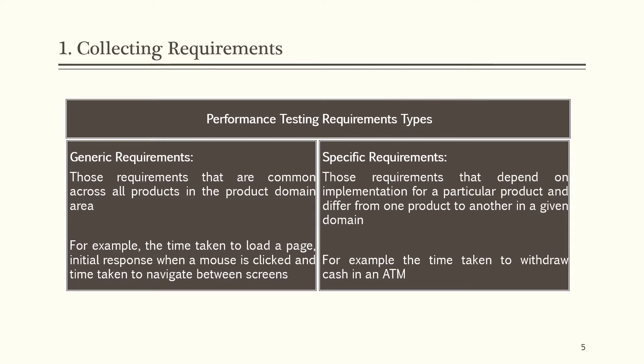There are two types of performance testing requirements: generic requirements and specific requirements. Generic requirements are those that are common across all products in the product domain area — for example, the time taken to load a page, initial response when a mouse is clicked, and the time taken to navigate between screens. Specific requirements are those that depend on the implementation for a particular product and differ from one product to another — for example, the time taken to withdraw cash in an ATM.